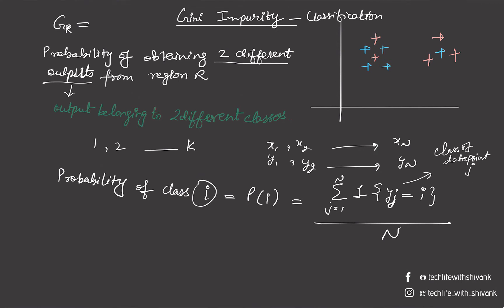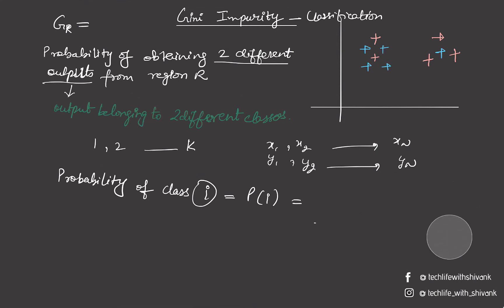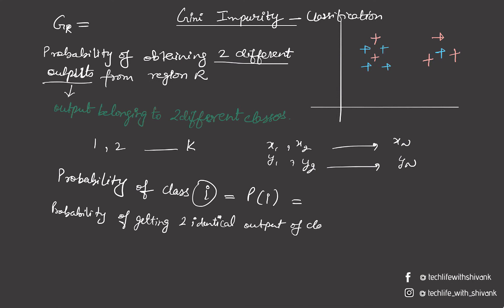Once we have the probability of class i, the probability of getting two identical outputs of class i is computed as follows: we pick one item — the probability of getting an item from class i is pi — then we put that item back and pick another. The probability of again getting an item from class i is pi. So this probability is pi squared.